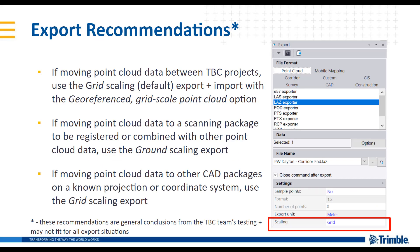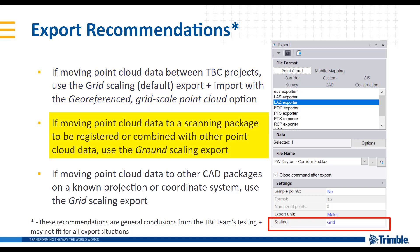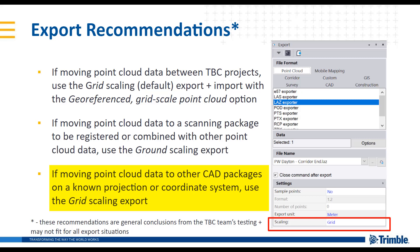Those questions on the export lead us to make the following export recommendations — with the asterisk that these are general conclusions from our team's extensive testing and may not fit all export situations. In general, for the most common cases: if you're moving point cloud data between TBC projects, use the grid scale option — that's the default. If you're moving to a scanning package to be registered or combined, such as Trimble RealWorks, use the ground scaling export option. If you're moving to another CAD package based on known projections or coordinate systems, use the grid scaling export option.